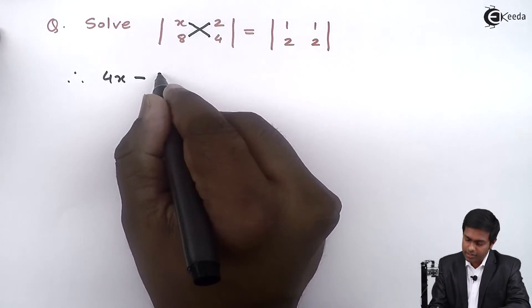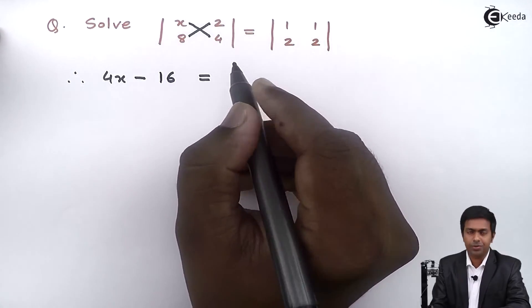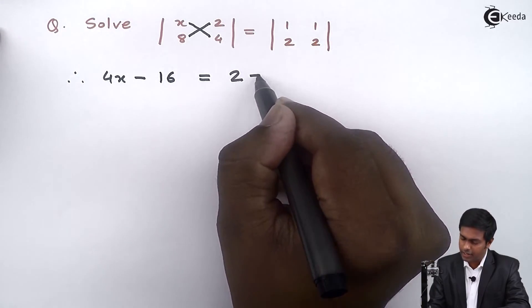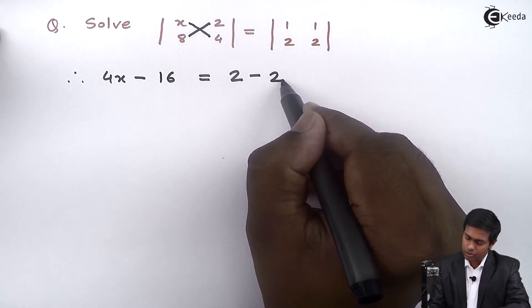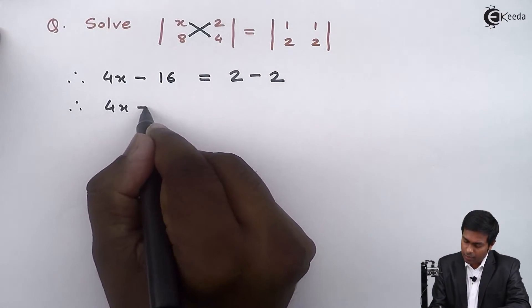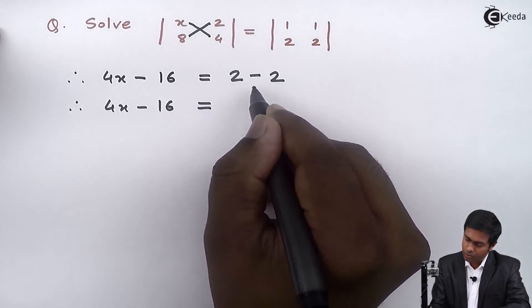So 8 into 2 that is 16, is equal to here we will get 1 into 2 that is 2 minus 1 into 2, 2. Therefore we will get 4x minus 16 equal to 0.